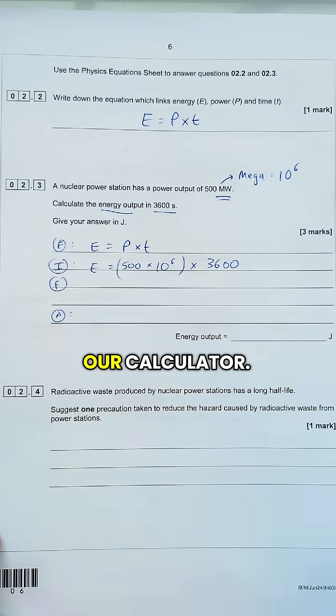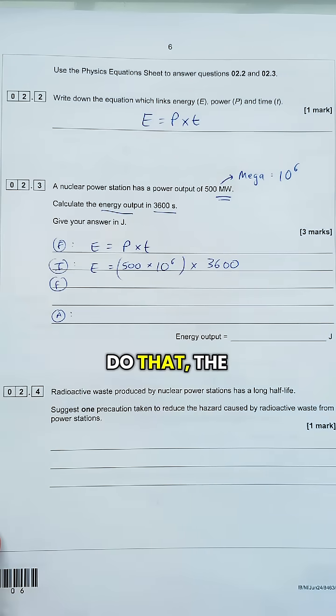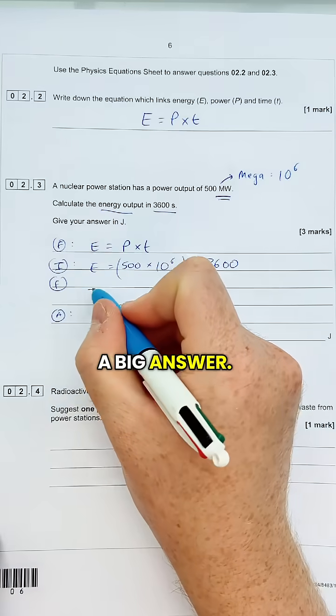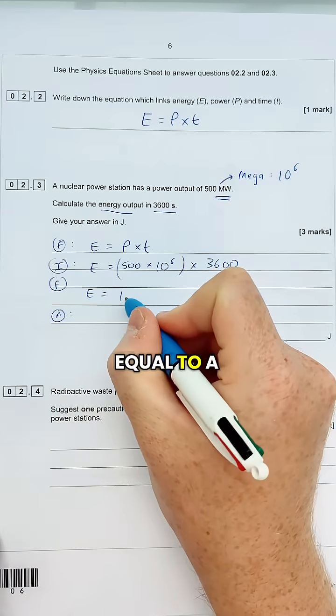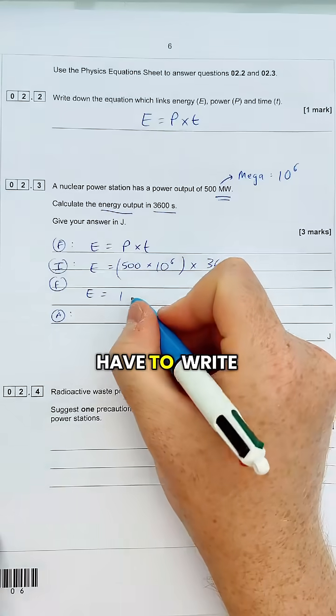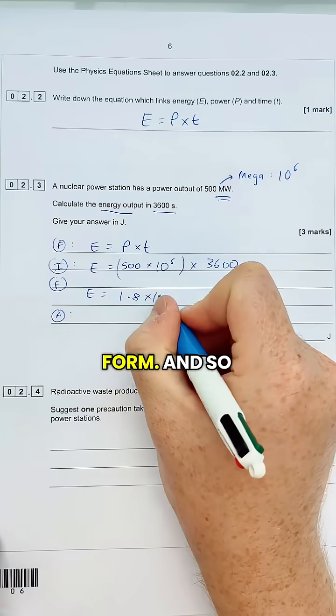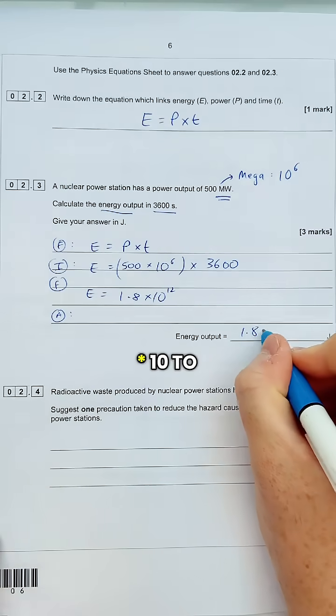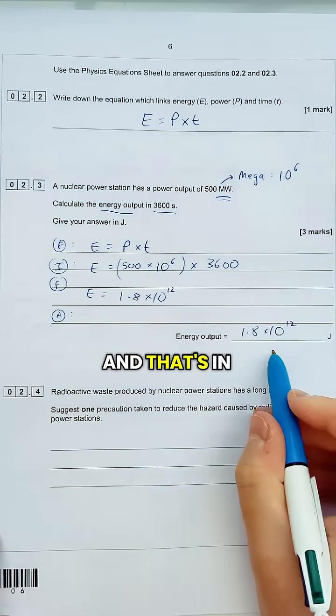So let's put that all into our calculator. If we do that, the calculation becomes quite a big answer, and so energy equals a really big number, but you don't have to write it all down with zeros. Put it in standard form, and so it's just 1.8 times 10 to the power of 12, and that's in joules.